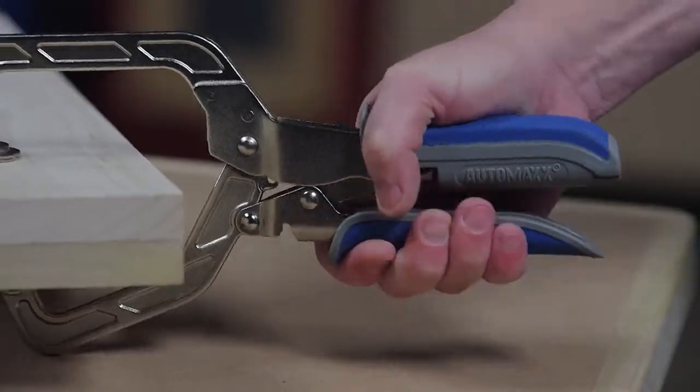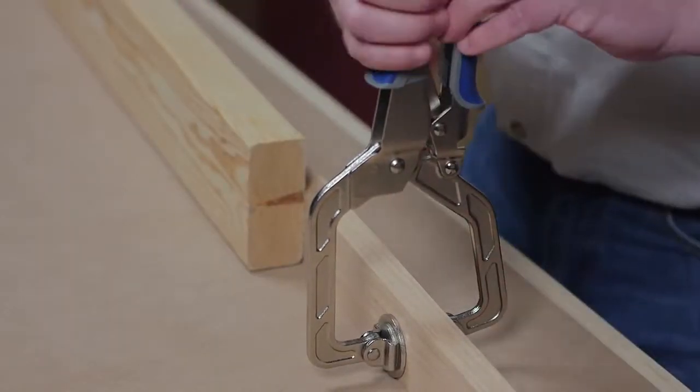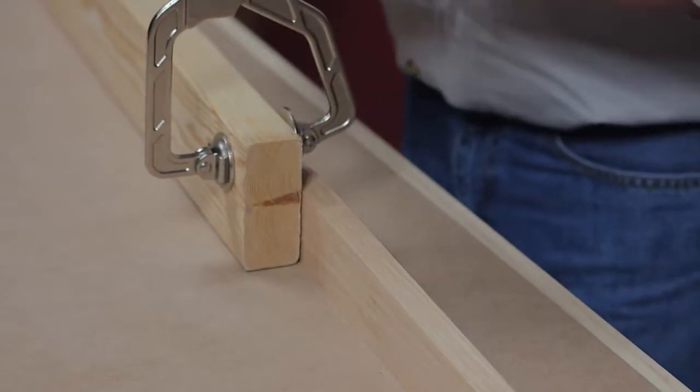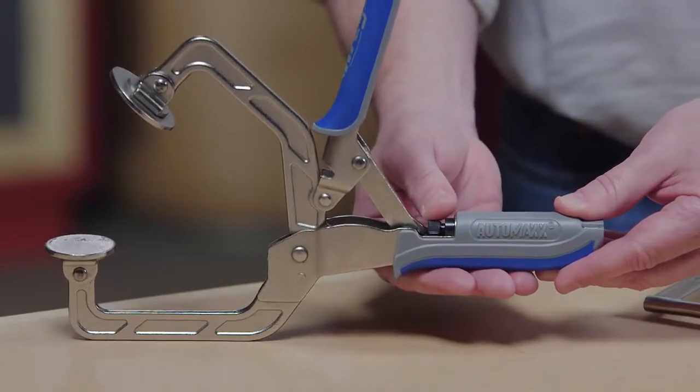Simply squeeze the clamp handles and AutoMax technology adjusts the clamps automatically to the correct thickness, all while keeping the clamping pressure you desire. A simple thumb screw gives complete control over that clamping pressure.